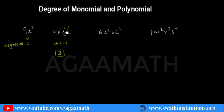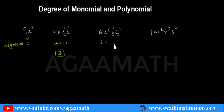Here we have three variables: a, b, and c in the term 6a²bc³. Whenever you want to find the degree of the monomial, add all the powers of the variables. That is 2 plus 1 plus 3, which equals 6. So the degree of 6a²bc³ is 6.